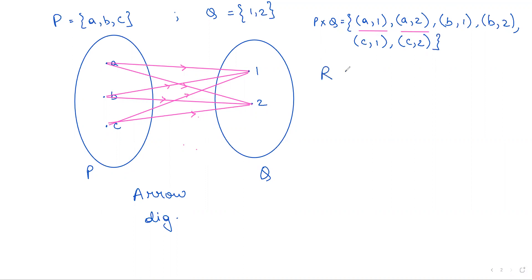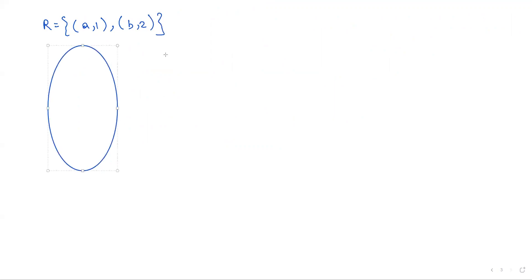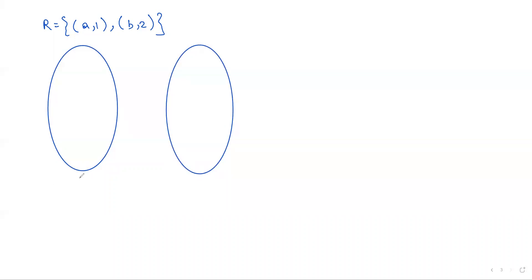Now, we know that R is a subset of P cross Q. So instead of representing all of these elements, let us consider R to be equal to certain values of these ordered pairs. I am considering two values in relation R. I have considered R to be the set of two values: A comma 1 and B comma 2. The first values are A and B; P's elements are A, B, and C, and Q's elements are 1 and 2. The first relation is A to 1, and the second relation is B to 2. Both lines should have arrows pointing towards the second value of your ordered pair.